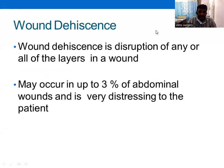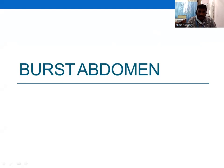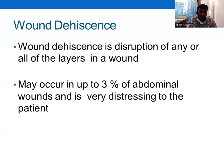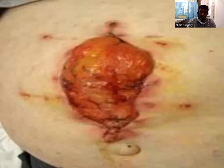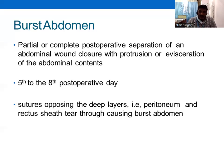Good morning. Today we are going to talk about burst abdomen. Wound dehiscence is disruption of any part of the body involving all the layers. It may occur in up to three percent of abdominal wounds and is very distressing to the patient. Burst abdomen is an open wound post-operative complication with different possible causes — it is a partial or complete post-operative separation of the abdominal wound closure.